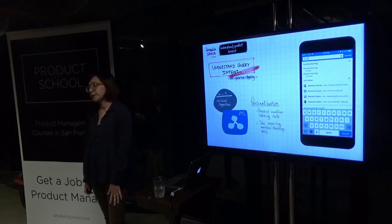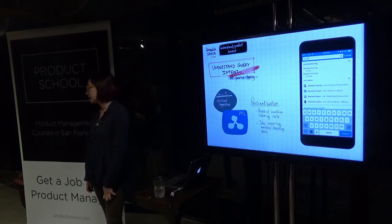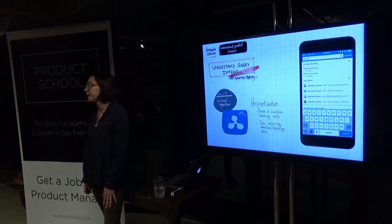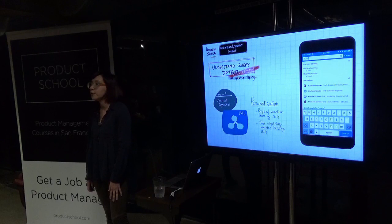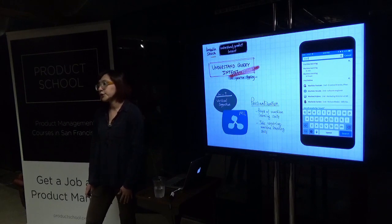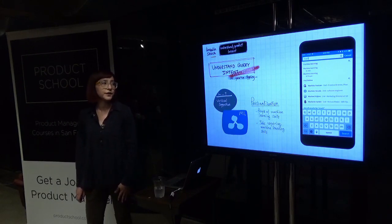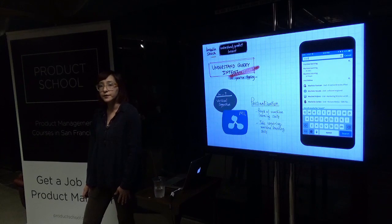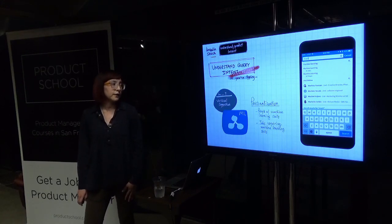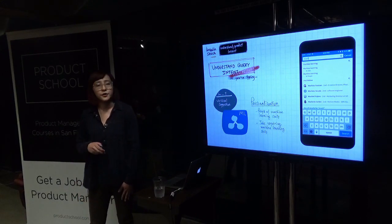Once we present autocomplete suggestions, if the query is ambiguous we suggest verticals as well. In this case I'm going for 'machine learning' — it's a pretty ambiguous query. We don't know if you're looking for people in the machine learning field or jobs that require machine learning skills. So we suggest both people and jobs verticals on top of those autocomplete suggestions. It's another ML model trained on previous searches and actions.